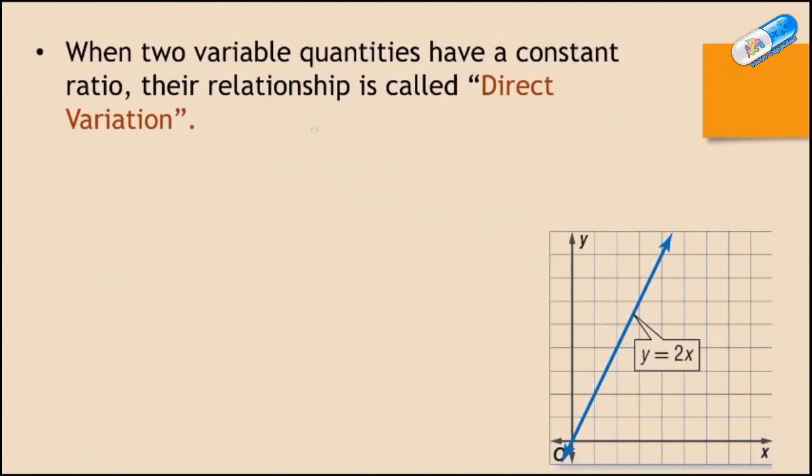So when two variable quantities have a constant ratio, the relationship is called direct variation. So in that case, y and x, the relationship between them is called direct variation because there is a constant ratio between them, which is 2 in that case.